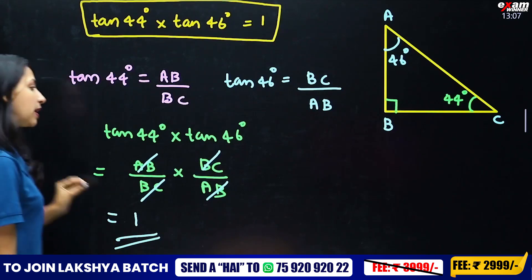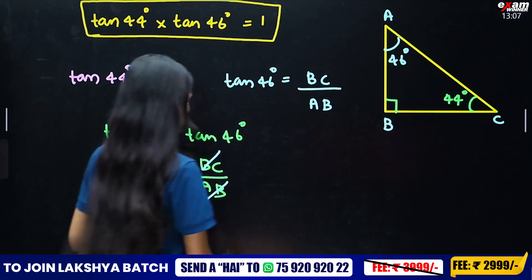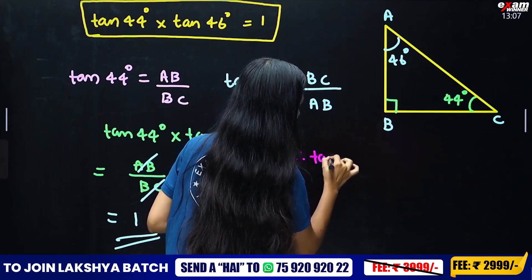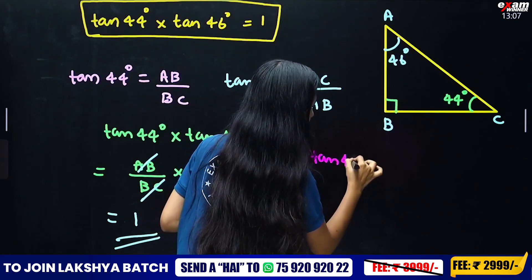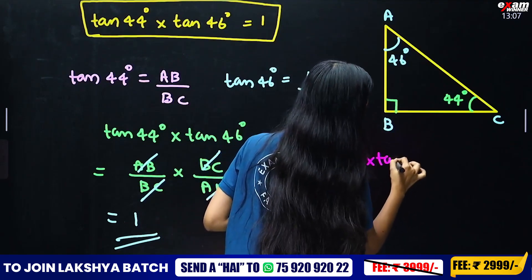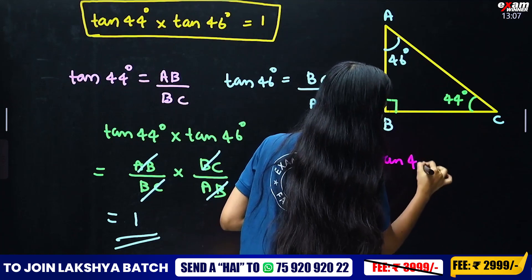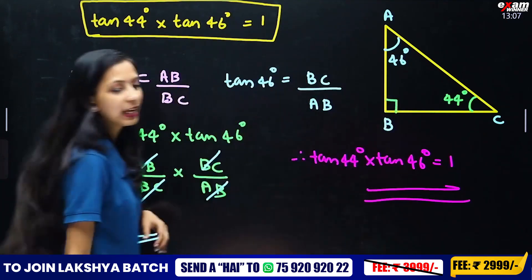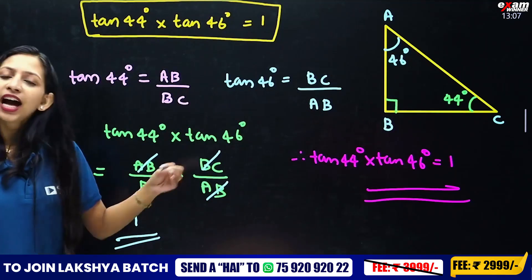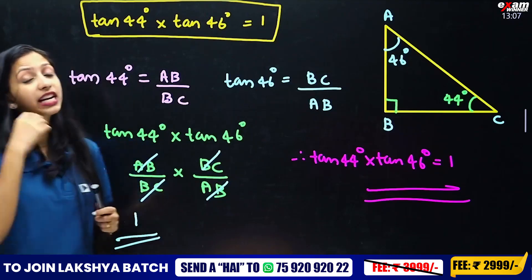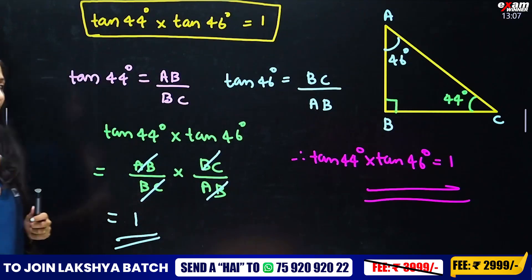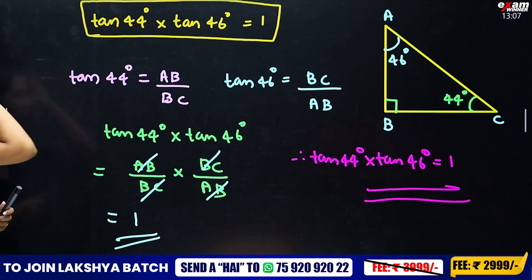Therefore, tan(44°) × tan(46°) = 1. Proved. It's very simple — you can do it.